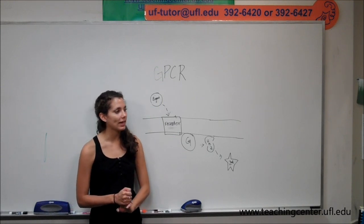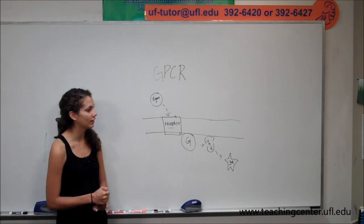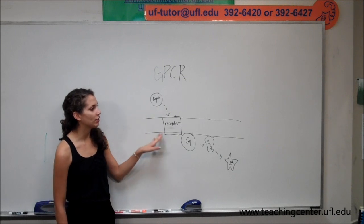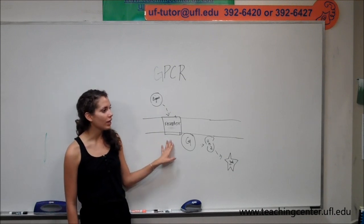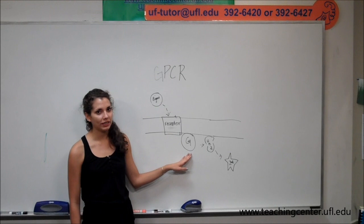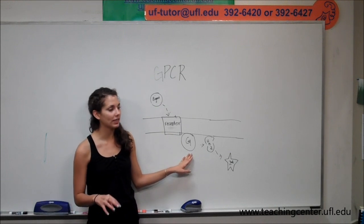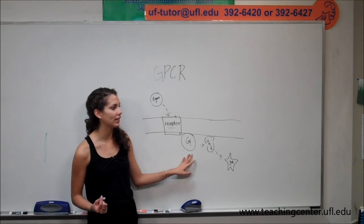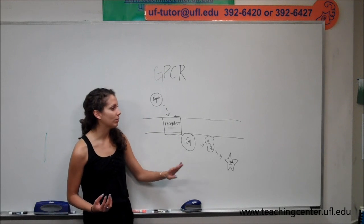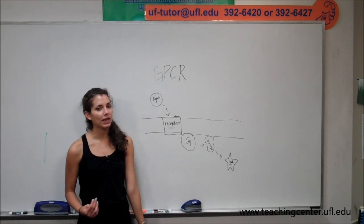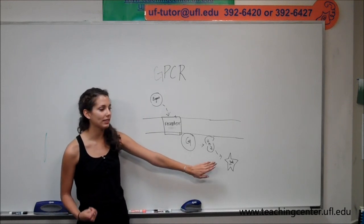In this pathway, an extracellular signal, the hormone, binds to a specific receptor, which then activates the G-protein causing it to bind GTP. This is when it's activated. The activated G-protein then activates phospholipase C. This is the enzyme in this signaling pathway.